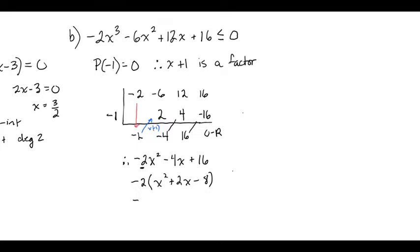This quadratic also factors by using the man method. Two numbers that multiply give me negative 8 and add to give me 2 are 4 and negative 2, so x plus 4, x minus 2.